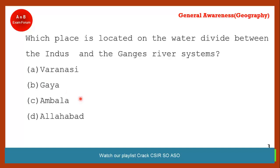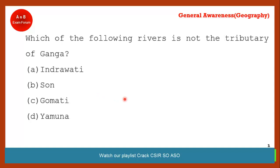Coming to the next question: which place is located on the water divide between the Indus and Ganga river systems? This is a tricky one. If you have studied this chapter well, you can answer it. The correct answer is option C — Ambala. Ambala is located between the Indus and Ganga river systems.